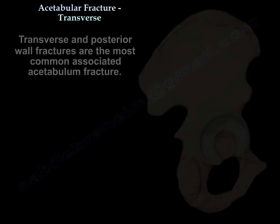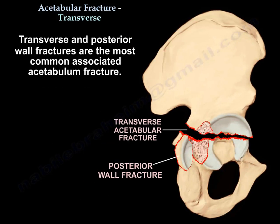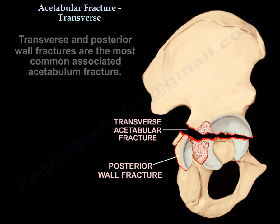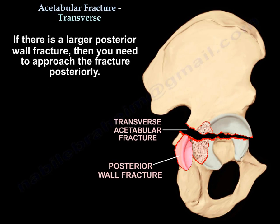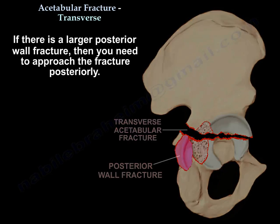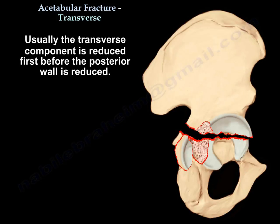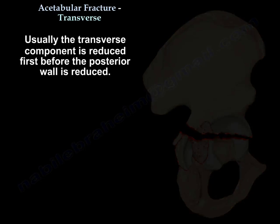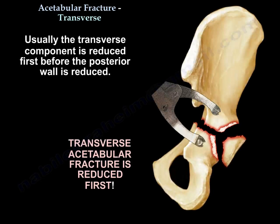The transverse and posterior wall fracture combination is the most common associated fracture pattern. If there is a large posterior wall fracture, the fracture must be approached posteriorly. Usually, the transverse component is reduced first before the posterior wall is reduced.